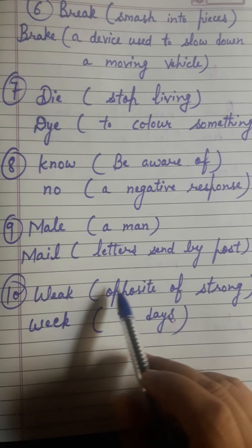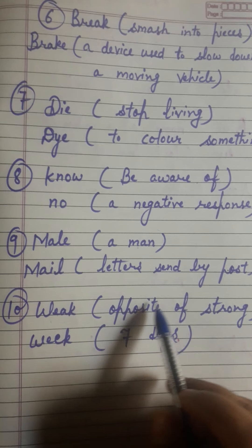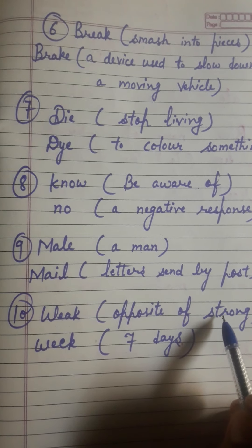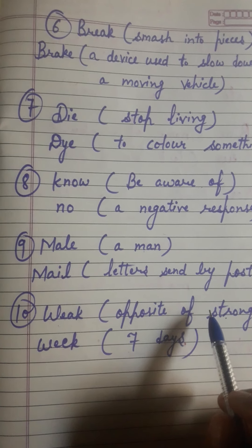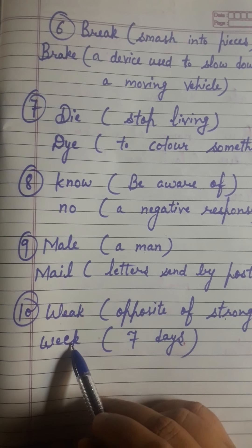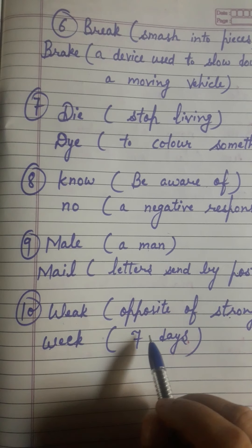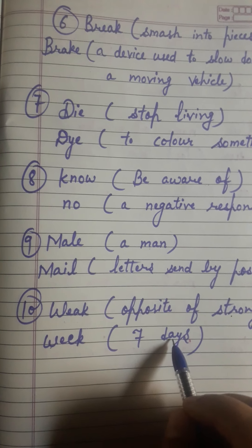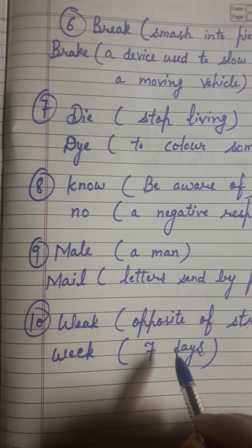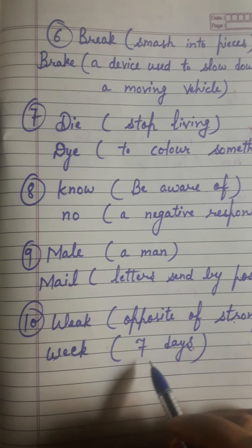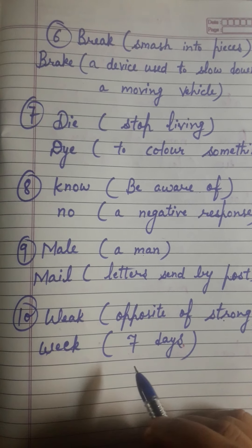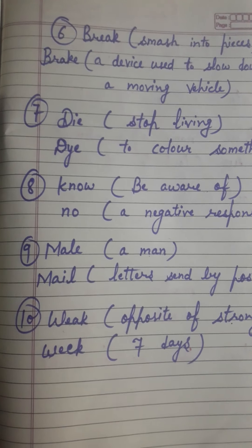W-E-A-K, weak — means opposite of strong, kamzor. W-E-E-K, week — means seven days; a week has seven days. So children, hope you understood the topic. Thank you.